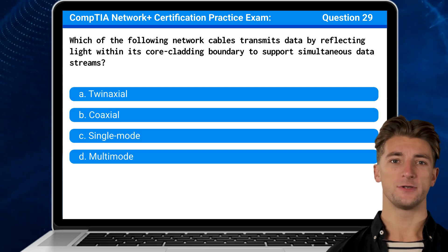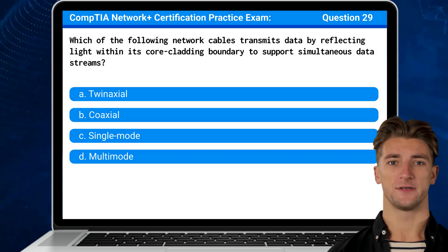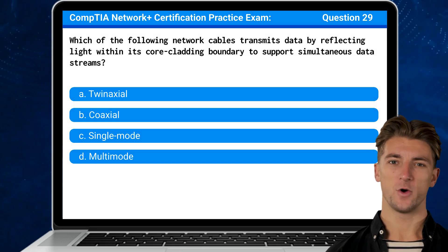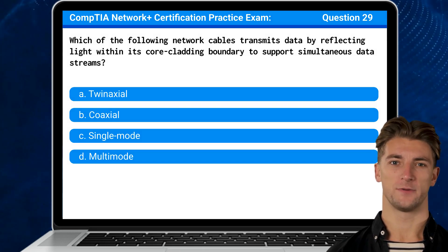Question 29: Which of the following network cables transmits data by reflecting light within its core cladding boundary to support simultaneous data streams?